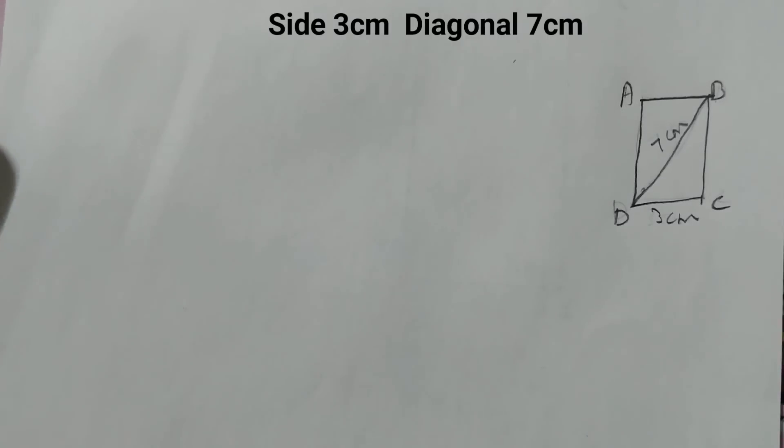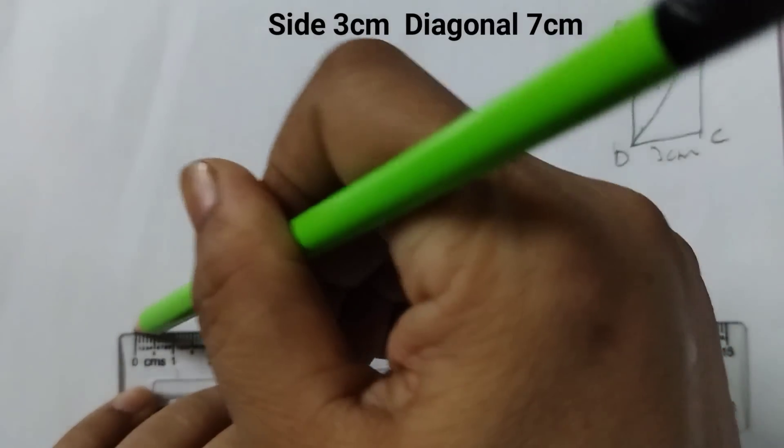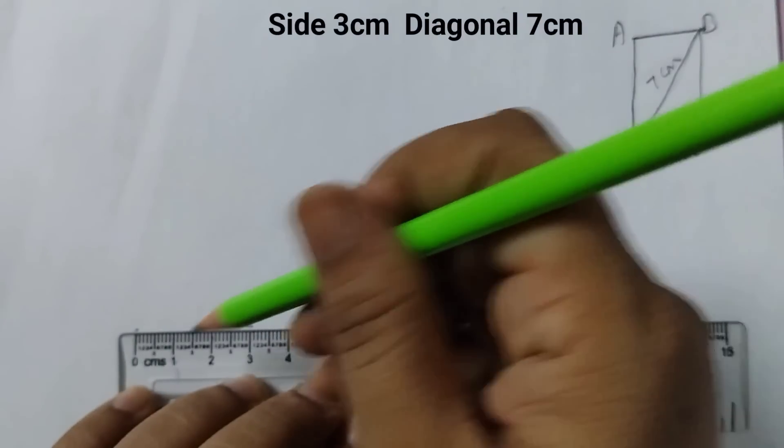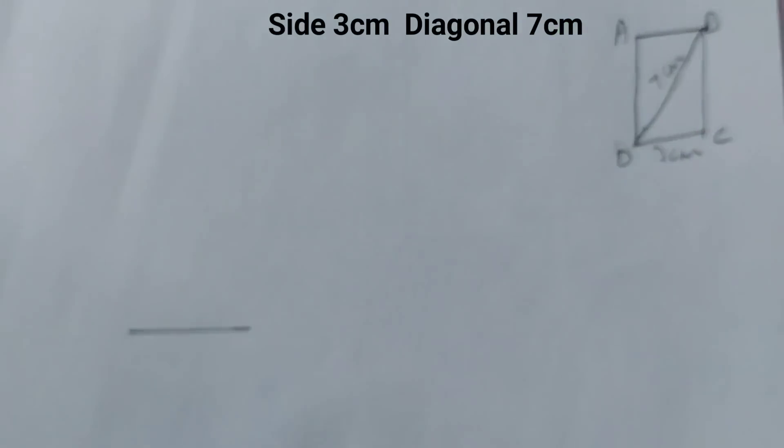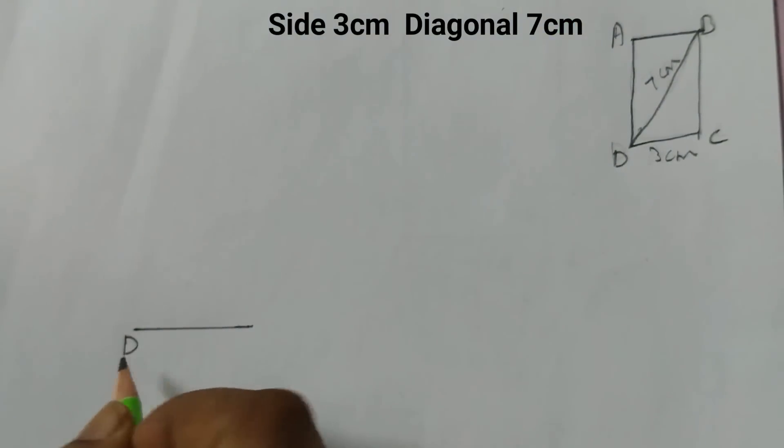Take a ruler first. 0 and 3. Draw a line segment. Label it as D and C.